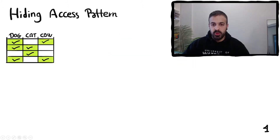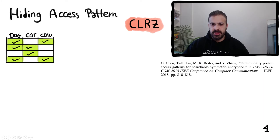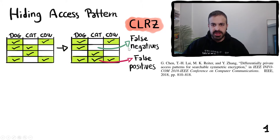One of the most efficient ways of hiding the search pattern is the scheme by Chen et al. that we call CLRC. The scheme takes the search index and generates false negatives and false positives. For instance in this example CLRC removes the keyword CAD from the second document and adds it to the fourth document. This hides the access pattern at the cost of adding false negatives and false positives in the response to queries.